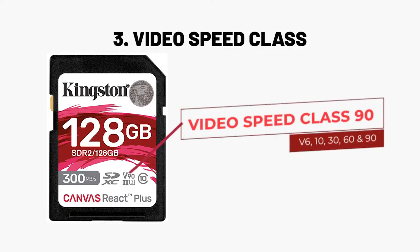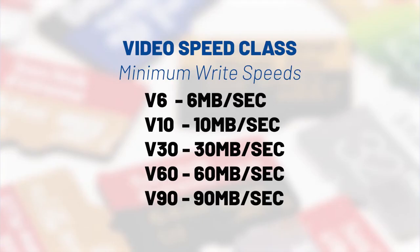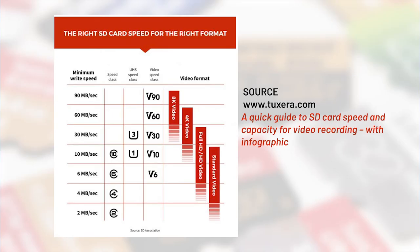The next speed class after UHS is called the Video Speed Class. In the Video Speed Class, you have five categories: V6, V10, V30, V60, and V90, each corresponding to a faster speed. Just like the other classes, the number after the V indicates the minimum write speed of the card. So if you see V30 on the card, that means a minimum write speed of 30 megabytes per second. The V class rating is especially important if you are working with very high definition video.